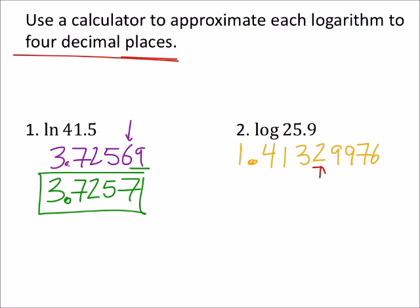I just need to go to the fourth decimal place, so that'd be 1.413. The 9 is going to round that 2 up to a 3. There we go.